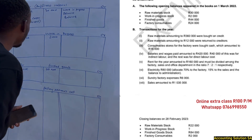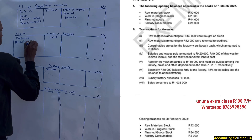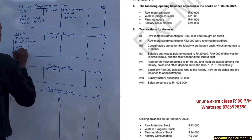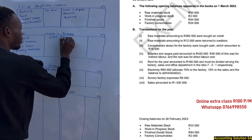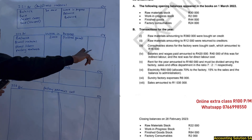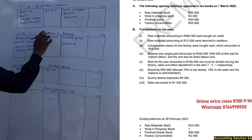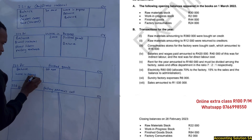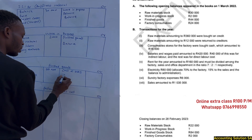For work in progress, on the debit side we have direct material, direct labor, and factory overheads. On the credit side we have finished goods — we transfer the balance across. Then for finished goods, on the debit side we have work in progress, and on the credit side we have cost of sales and a closing balance.